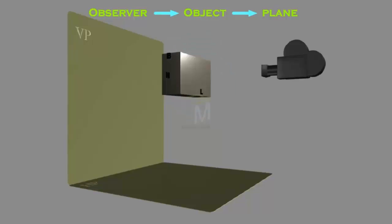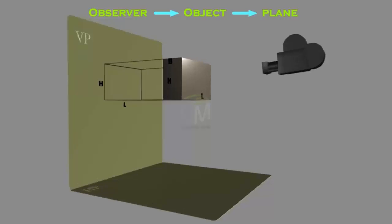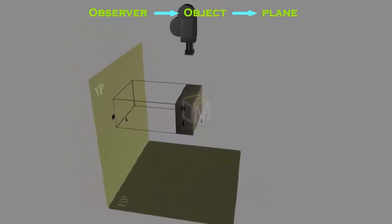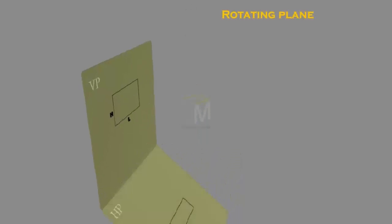To draw the top view, look at the object from the top and check the setup. Now project the top view on horizontal plane, rotate the horizontal plane through 90 degrees and keep it in line with vertical plane.